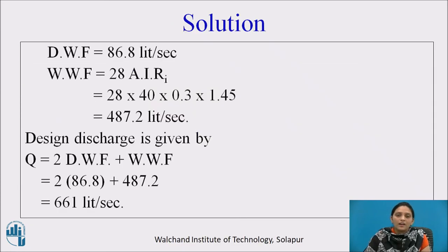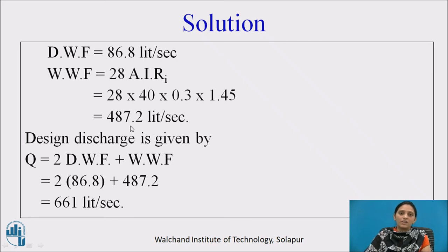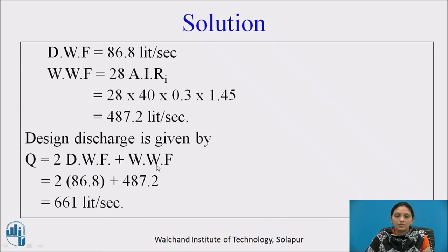Wet weather flow: since discharge is in liters per second, we use the formula Q = 28 · A · I · RI. So wet weather flow = 28 × 40 × 0.3 × 1.45 = 487.2 liters per second. Design discharge = wet weather flow + 2 × dry weather flow = 487.2 + 2 × 86.8 = 487.2 + 173.6 = 661 liters per second.